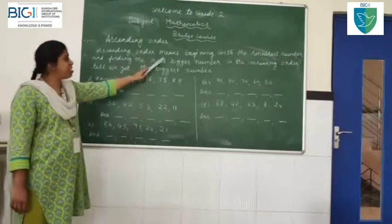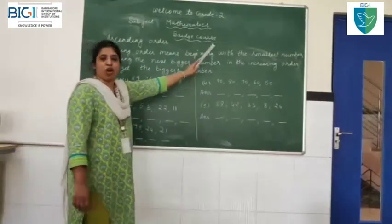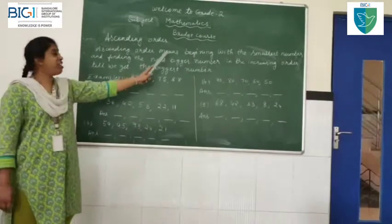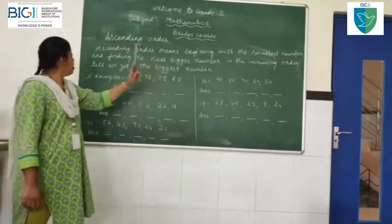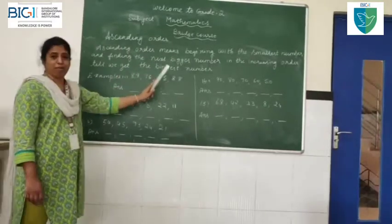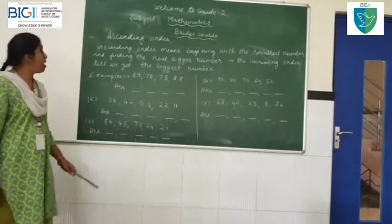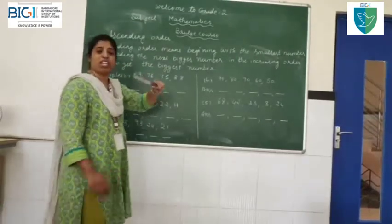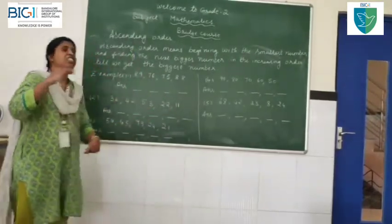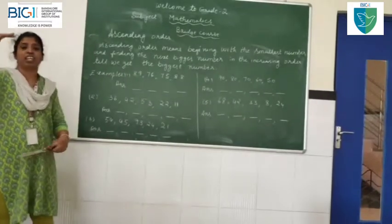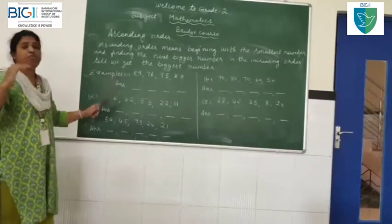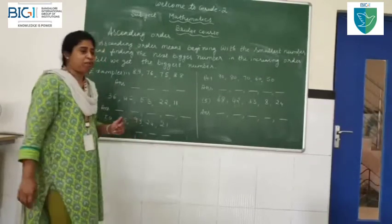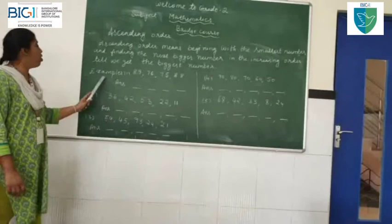Ascending order means beginning with the smallest number and writing the next bigger number in increasing order, until we get the biggest number. Shall I repeat? Ascending order means beginning with the smallest number and writing the next bigger number in increasing order till we get the biggest number. Now, shall I give examples?